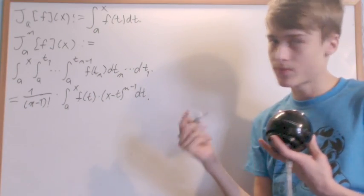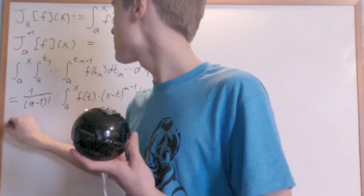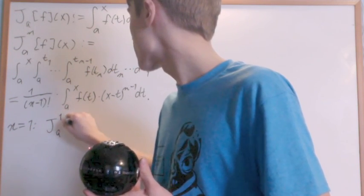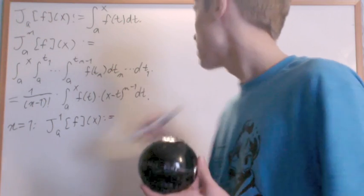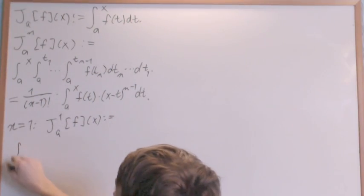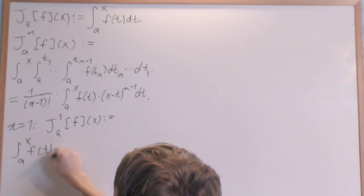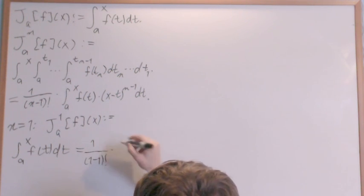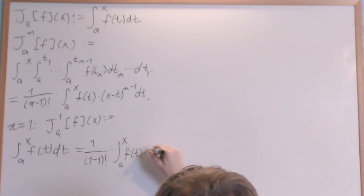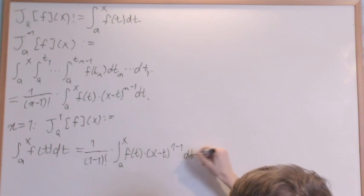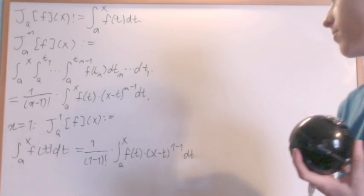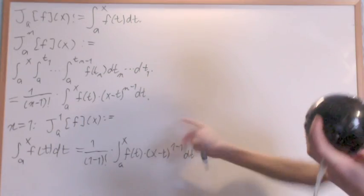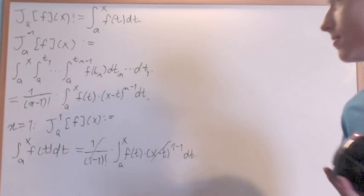We're going to prove this using induction. Starting with the base case n=1: J^1_a f(x) is just the integral from a to x of f(t) dt, which is trivially equal to 1 over (1−1)! times the integral from a to x of f(t) times (x−t)^{1−1} dt. Since 0! = 1 and (x−t)^0 = 1, everything simplifies and we're done — that's the base case.